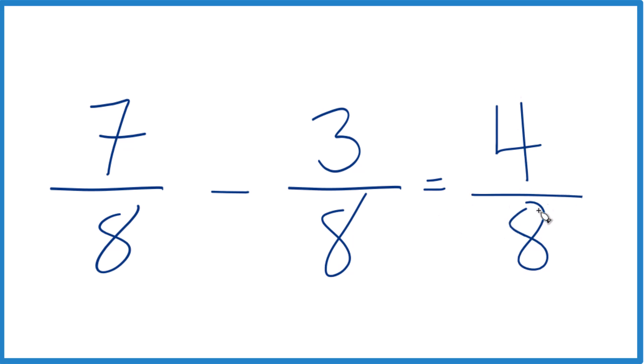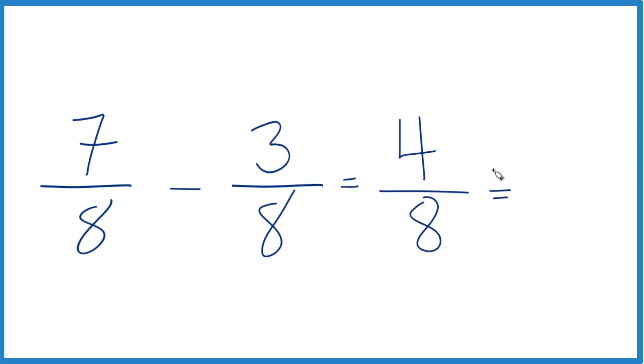But we could simplify this further. These are both even numbers. In fact, 4 would go into 4. 4 divided by 4 is 1. 8 divided by 4, that is 2.